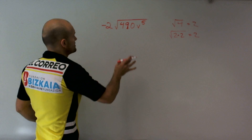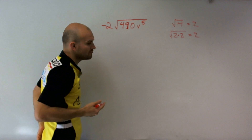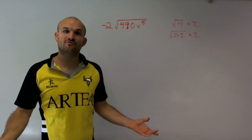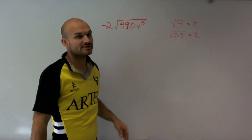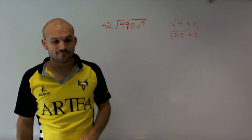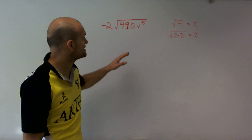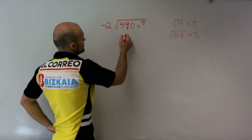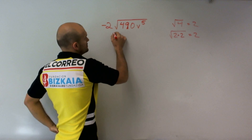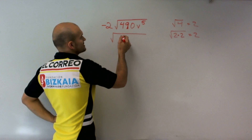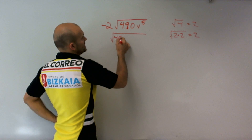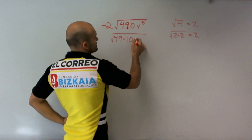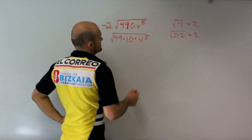What I'm going to do is factor this out. I need to factor 490 — I need to determine what number goes into 490. Since it ends in a 0, 10 is going to go into it. So I can rewrite this as 49 times 10 times b to the 5th.